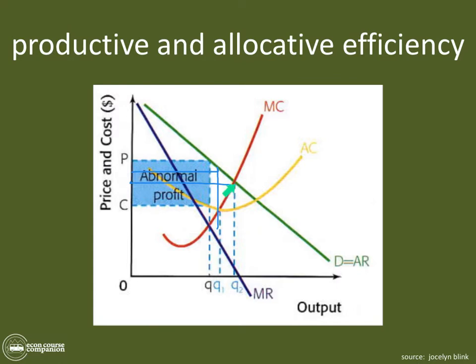Is Q2 the profit maximizing level of output for a firm? No, that's higher up. Is it the productively efficient point? No, that's also higher. So when firms think about profit maximization, the price level will actually be higher than if they thought about their own productive efficiency, or if they thought about allocative efficiency for society as a whole. Those are three really key points.